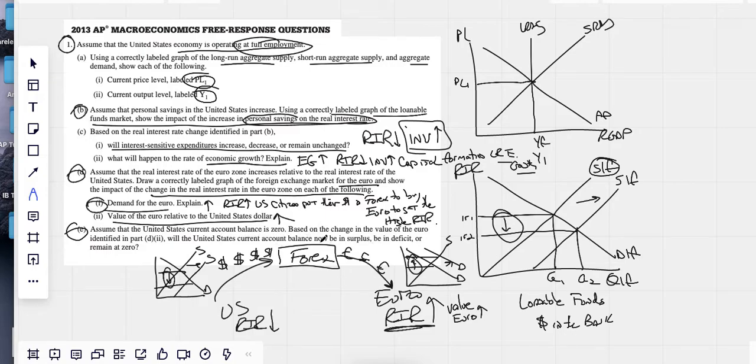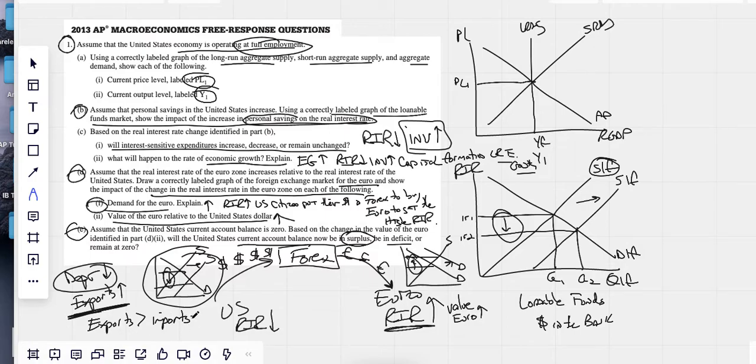Assume the United States current account balance is zero based on the change in the value of the Euro. Will the U.S. current account balance now be in surplus, deficit, or remain at zero? So just make sure you understand that if a currency is depreciating, their exports have to be increasing. As the U.S. dollar gets weaker, it will be a better buy for Europeans, right? Their currency is stronger. They're going to want to buy our stuff. As our currency depreciates, our exports would go up. So our current account balance would be in a surplus because exports are now going to be greater than imports, at least relatively. So this would give us more of a surplus. They said we were at zero. So now any exports increase would give us a surplus.